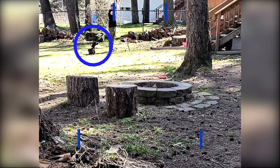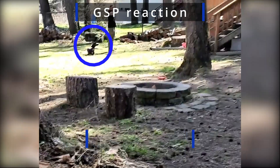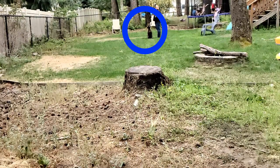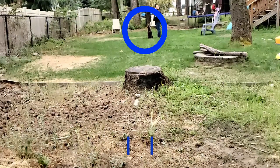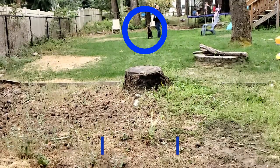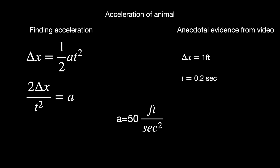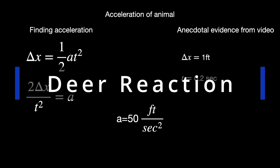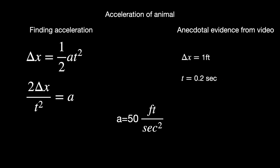First thing we need to do is figure out what exactly is the rate of acceleration an animal can move at. Since they're starting from a resting position, we have to approach it from this perspective. There are two things I originally looked at here: the first is gravity, and the second is video evidence. An animal with its head down that has the ability to throw its head up or use its back muscles can actually accelerate itself faster than the rate of gravity in the vertical direction.